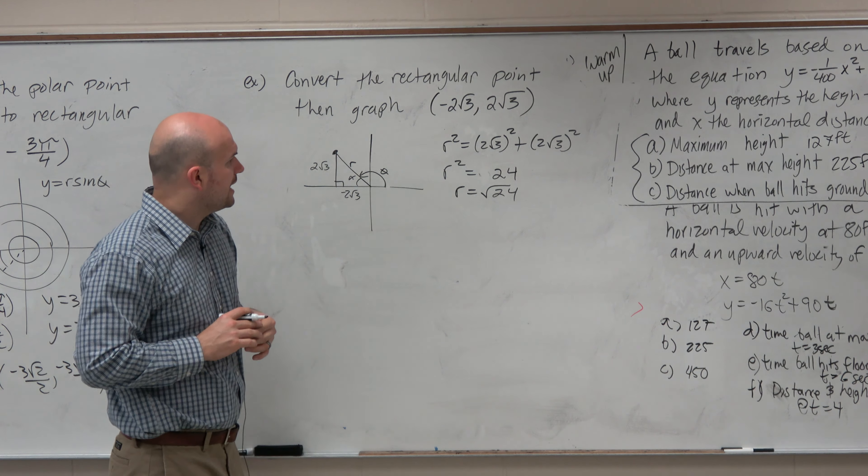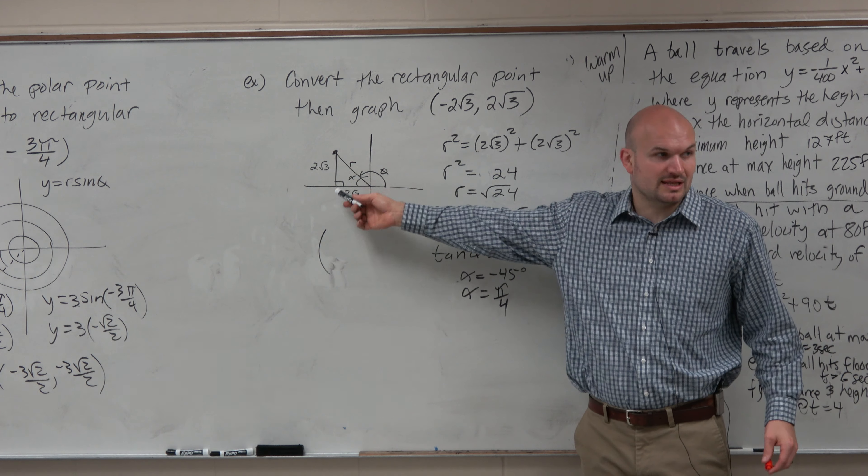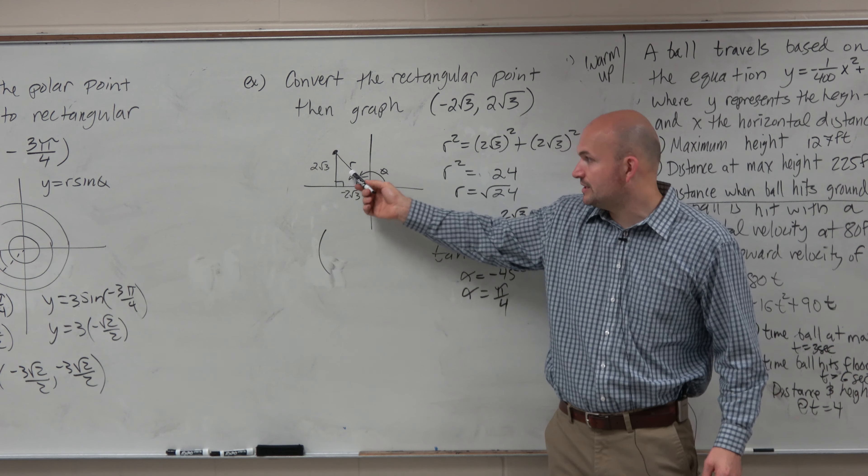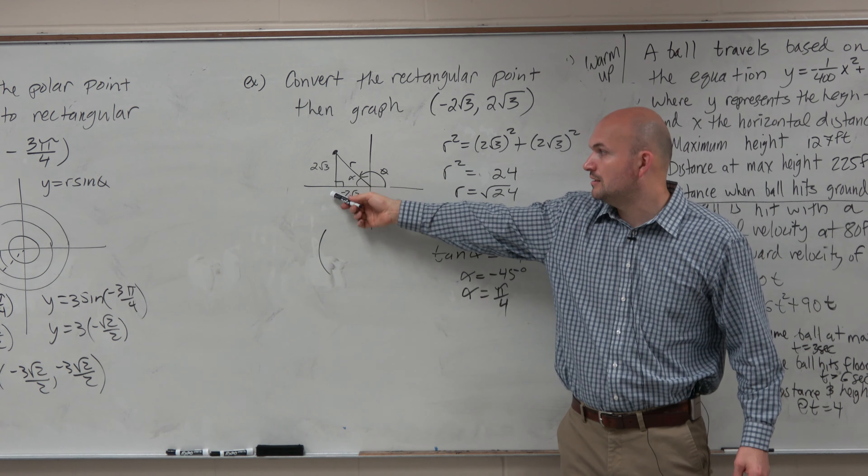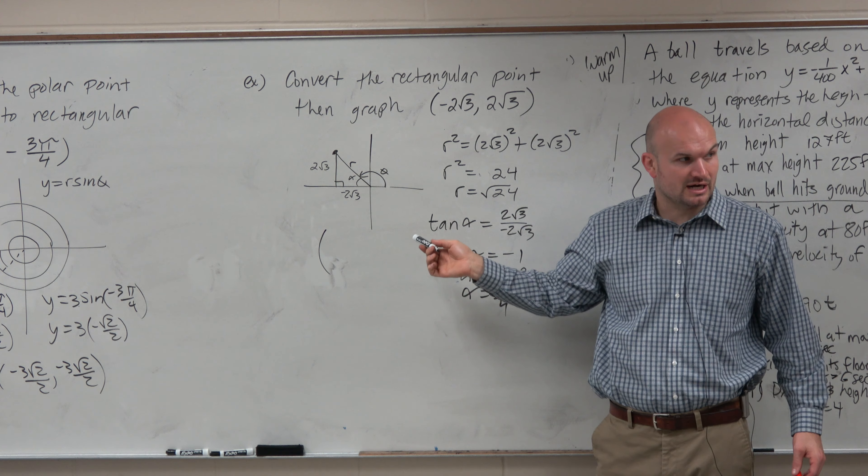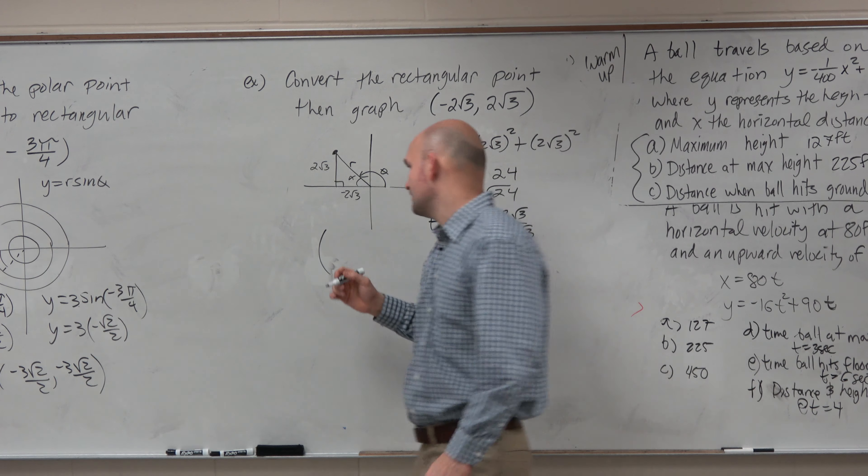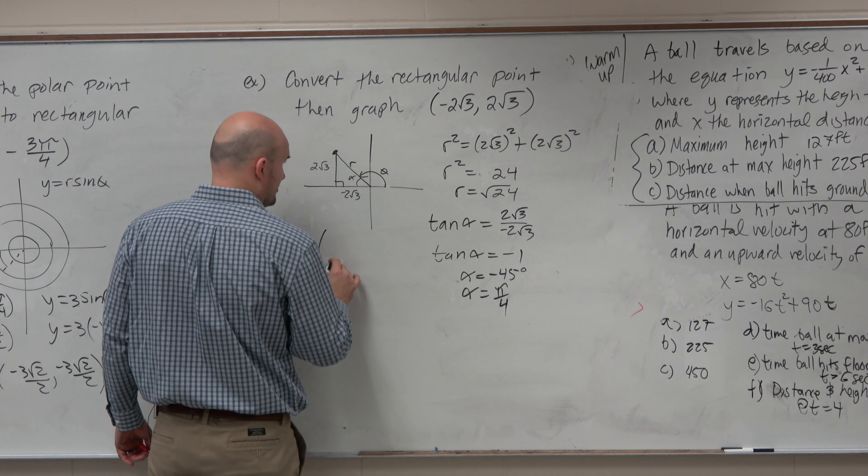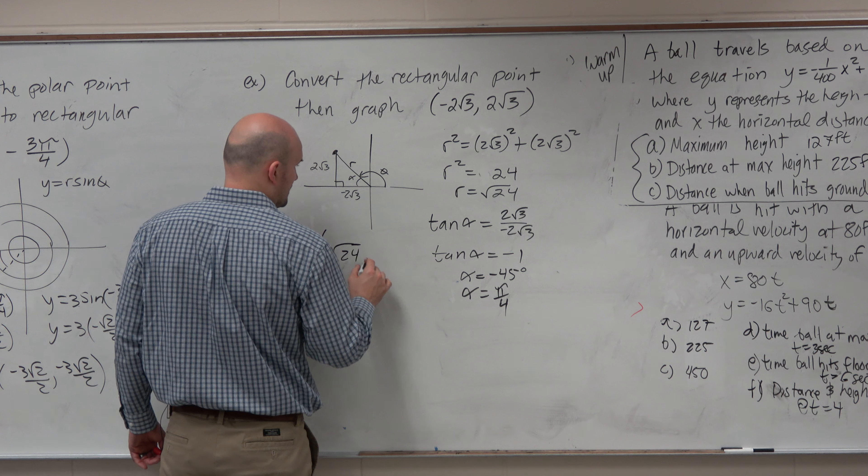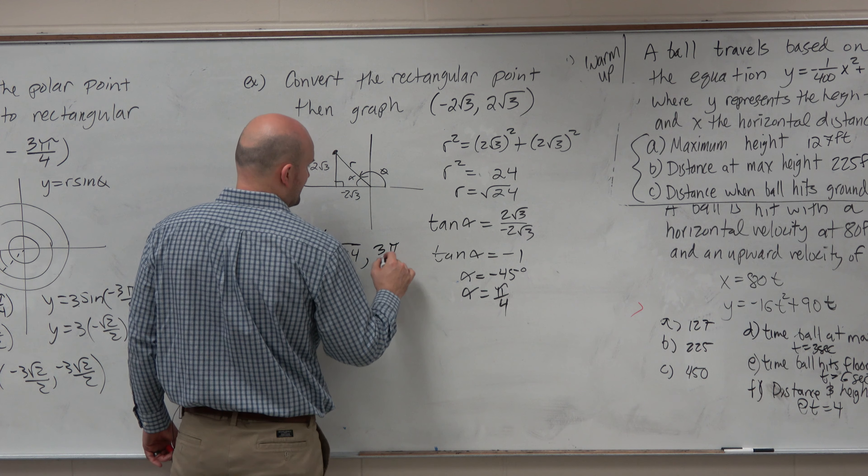However, if we're going to deal with this in radians, then we really want to call that what? Pi over 4. And then how does theta relate to that angle? So from here to here is π/4. All the way around the circle is π, or 4π/4. If alpha is π/4, then theta is 3π/4. So your answer would be the square root of 24, comma, 3π/4.